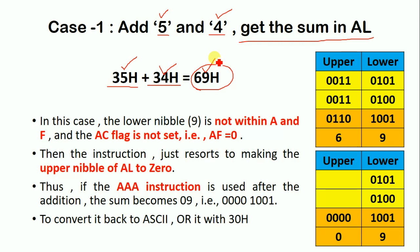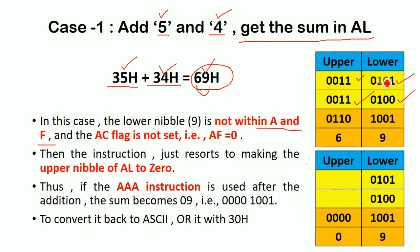Now we check the lower nibble of the result 69H. The lower nibble '9' is not within the range of A to F. Also, when adding 35H and 34H, there is no carry transfer from the lower nibble to the upper nibble, so the auxiliary carry flag is set to 0.